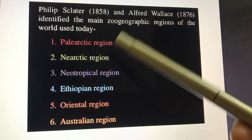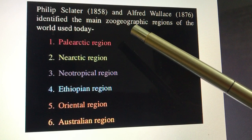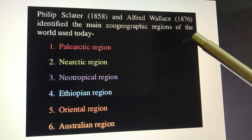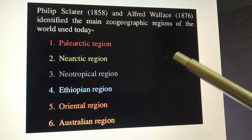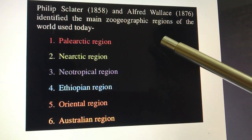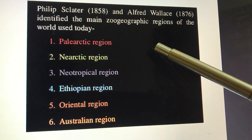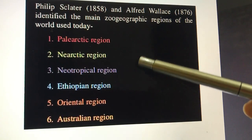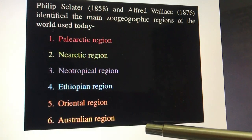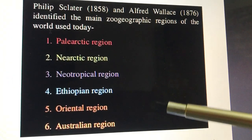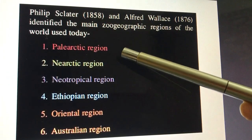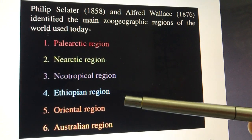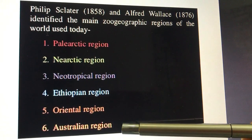Philip Sclater 1859 और Alfred Wallace 1876 में इन लोगों ने जो geographic regions हैं संसार के, उनको छह भागों में बाँट दिया। और इनके द्वारा जो छह regions बताए गए थे, आज के समय भी वही follow किए जाते हैं। यह छह regions हैं: Palearctic region, Nearctic region, Neotropical region, Ethiopian region, Oriental region, और Australian region।